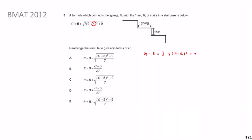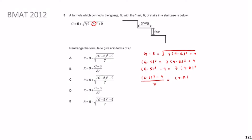Then I'm going to get rid of the square root — the next obvious thing to do is square both sides. I get G minus 5, all squared, equals 79 minus R squared plus 9. Then shift the 9 across: G minus 5 squared minus 9 equals 79 minus R, all squared. Then take the 7 across: G minus 5 all squared minus 9, over 7, equals 9 minus R, all squared.